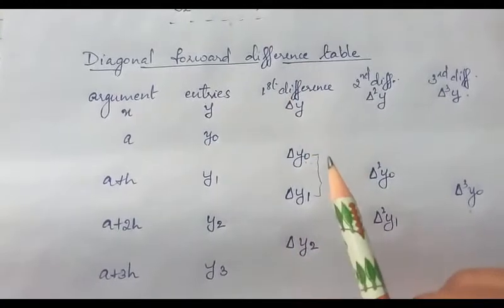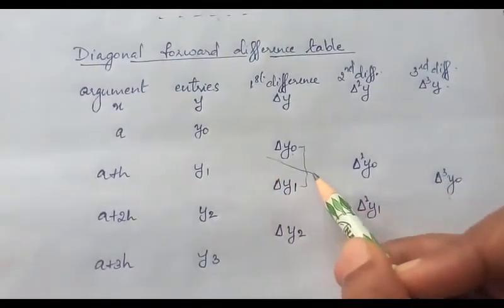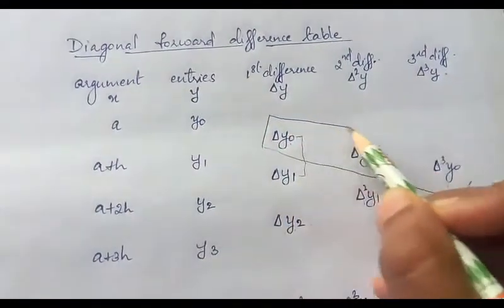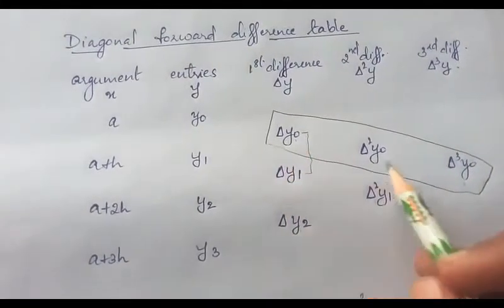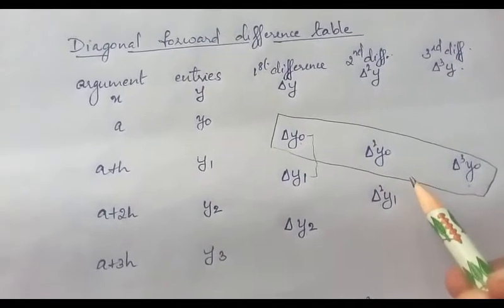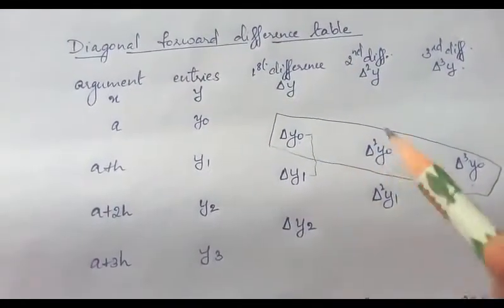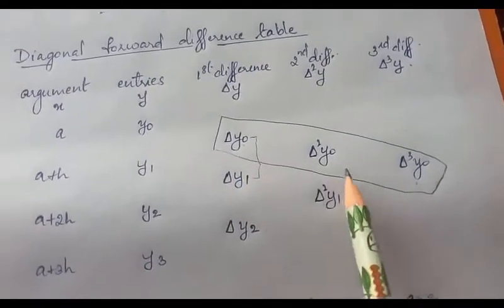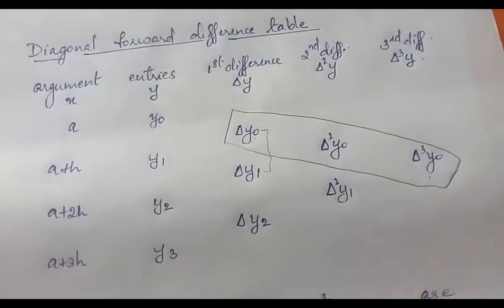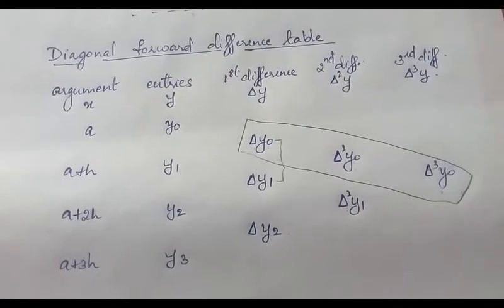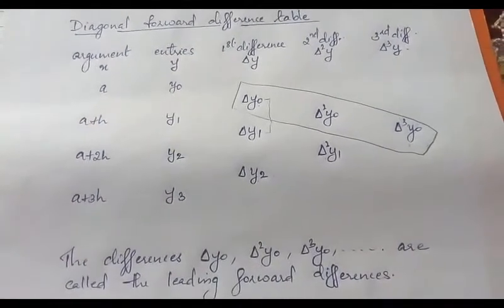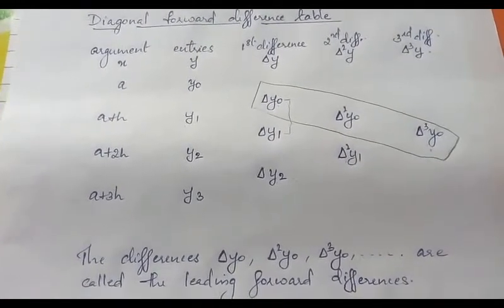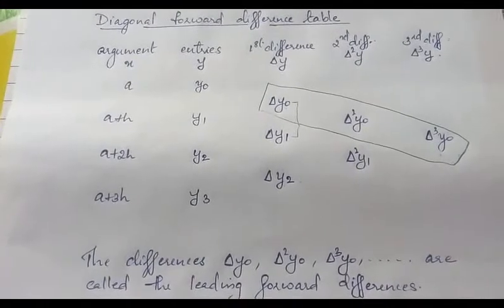In this diagonal forward difference table, the diagonal elements — that is, delta y0, delta squared y0, delta cube y0, and so on — are taken as the leading forward differences. So the leading forward differences are delta y0, delta squared y0, delta cube y0. These values will be used for interpolation formulas.